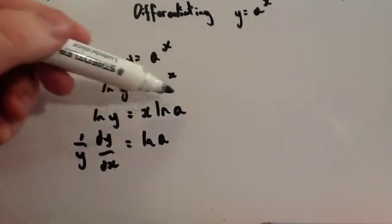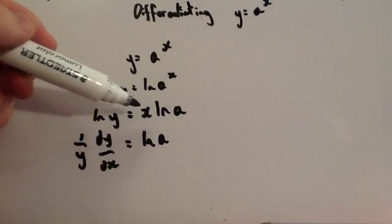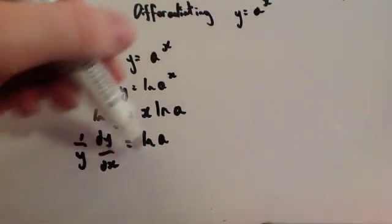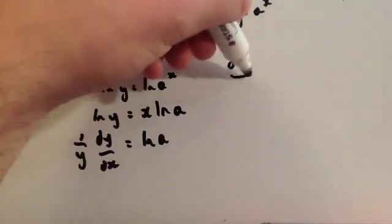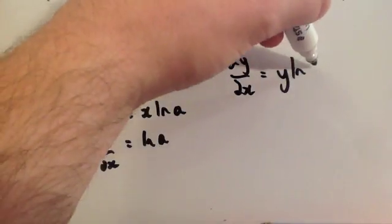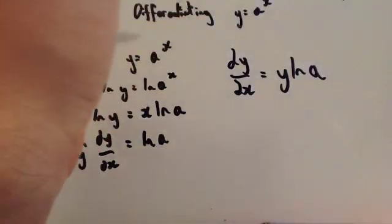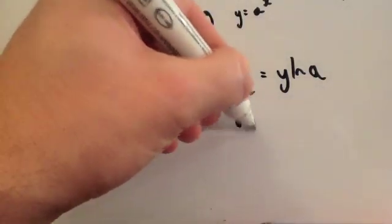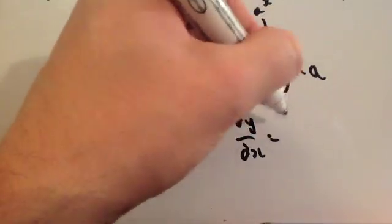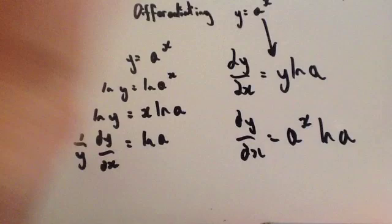So differentiating the right side just gives ln(a). Multiplying both sides by y, you get dy/dx equals y·ln(a). But remember y equals a to the x, so substituting back in gives the standard result: dy/dx equals a to the x times natural log of a.